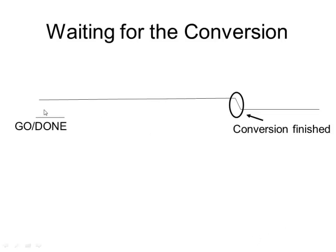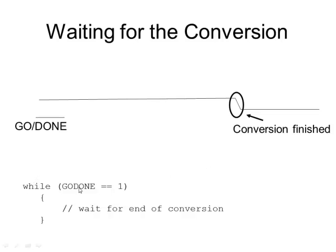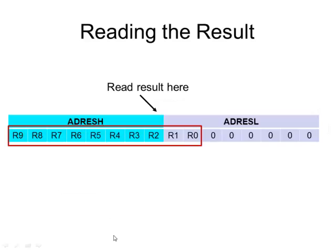Then you sit and wait for this bit to go low again — the microcontroller itself will force this bit low to indicate the conversion is finished. You do this with a while loop that says while go_done equals one. The loop does nothing except wait; as long as that bit is high, it stays in the loop. As soon as the signal goes to zero, the condition is false, it breaks out of the loop, and execution continues below.